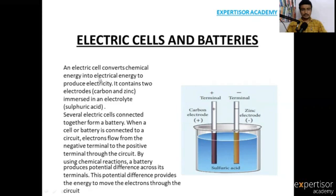An electric cell converts chemical energy into electrical energy to produce electricity. It contains two electrodes — carbon and zinc — immersed in an electrolyte, which is sulfuric acid.